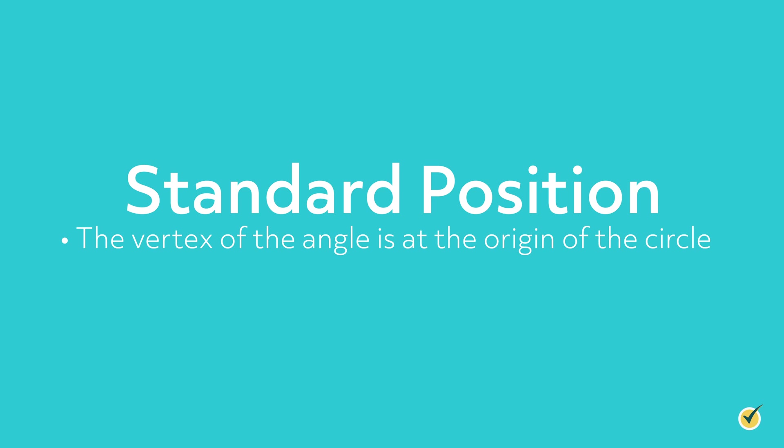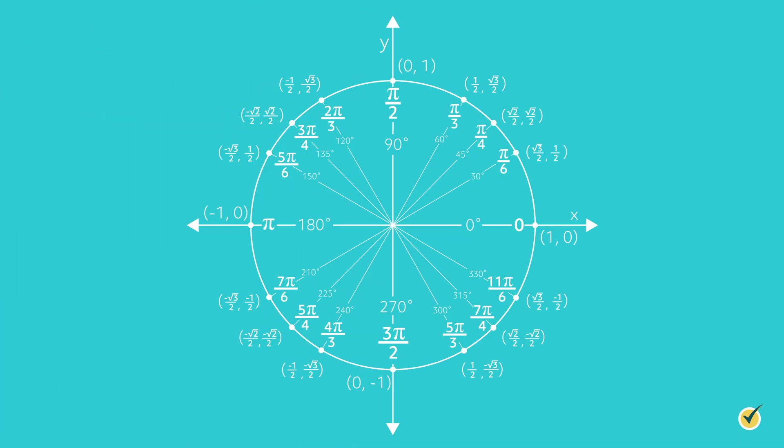An important thing to note when discussing these angle measures is that the angles must be in standard position. Standard position simply means that the vertex of the angle is at the origin of the circle, and that one ray of the angle is on the positive x axis. The other ray of the angle is placed at the angle measure formed by traveling counterclockwise along the circle. If an angle is not in standard position, it is important to place it in standard position before using the points to find your trig values.